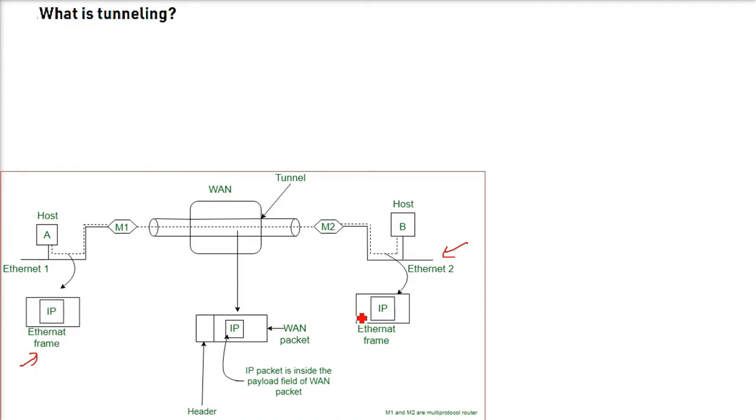So what to do? The WAN packet can take this IP packet and put it inside as a payload. IP packet is inside the payload field of a WAN packet, wide area network packet.